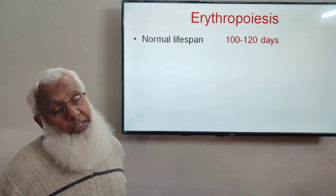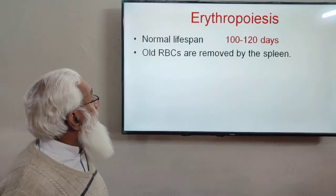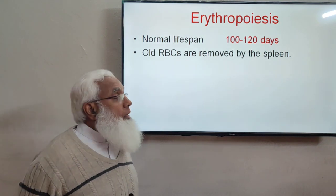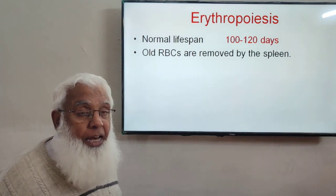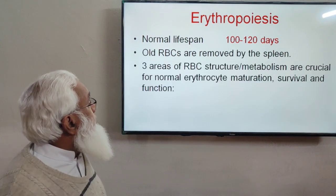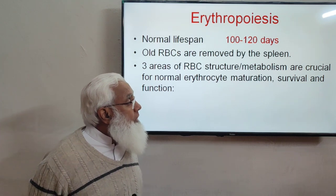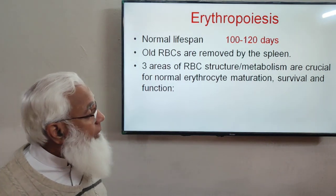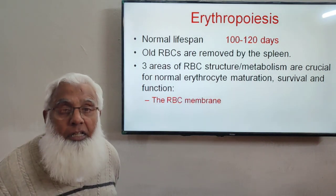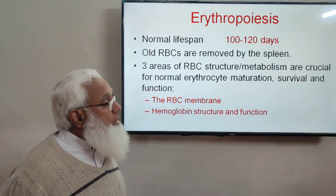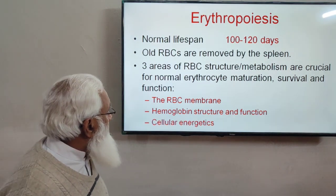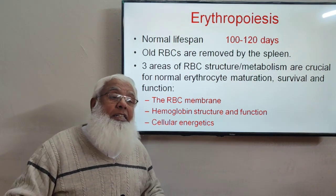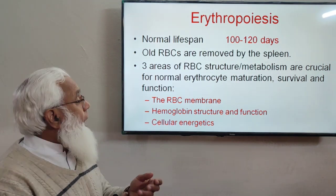The normal lifespan of RBCs is 100 to 120 days. The spleen is the graveyard of RBCs — fragile RBCs are removed and undergo hemolysis there. Three areas of RBC structure and metabolism are crucial for normal reticulocyte maturation, survival, and function: the RBC membrane, which gradually becomes fragile over time; hemoglobin structure and function; and cellular energetics — ATP synthesis — which is limited because there is no nucleus.